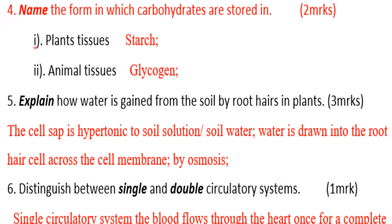Number five: explain how water is gained from the soil by roots in plants. The cell sap is hypertonic to the soil solution, so soil water is drawn into the root hair cells across the cell membrane by osmosis.